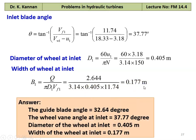The answer to the problem: inlet guide blade angle 32.64 degrees, wheel vane angle at the inlet 37.77 degrees, diameter of the wheel at the inlet 0.405 meter, width of the wheel at the inlet 0.177 meter.